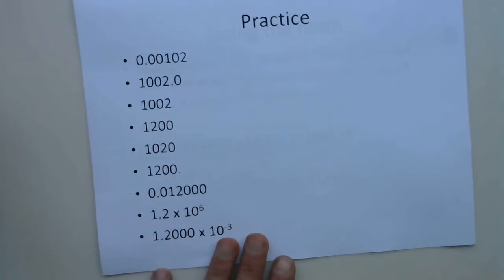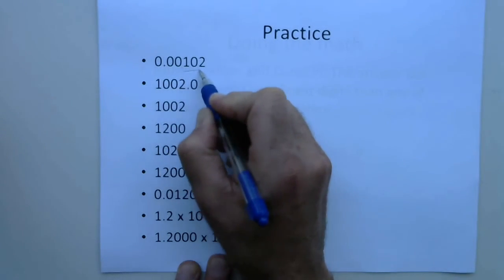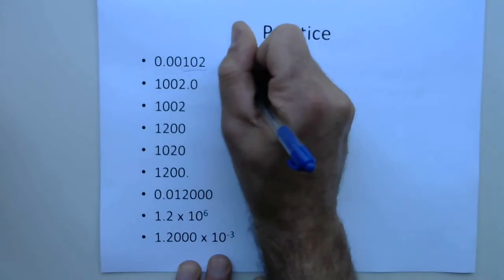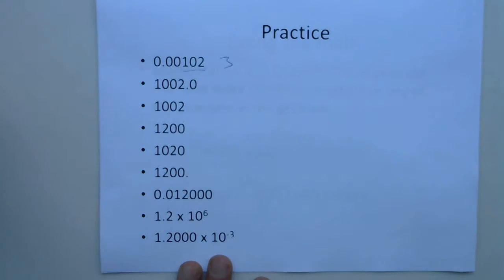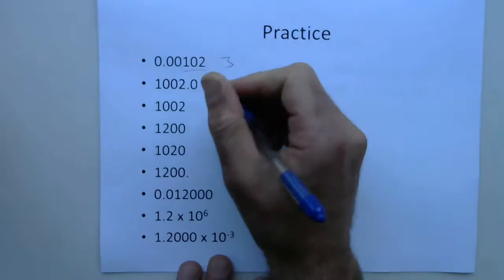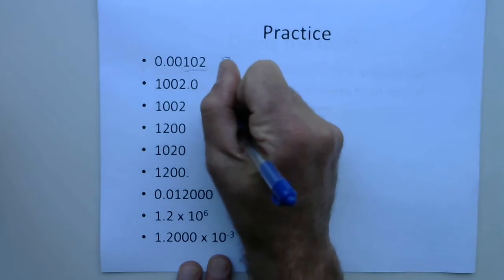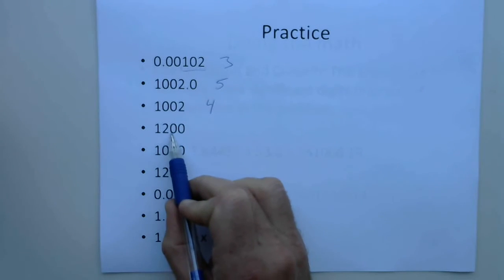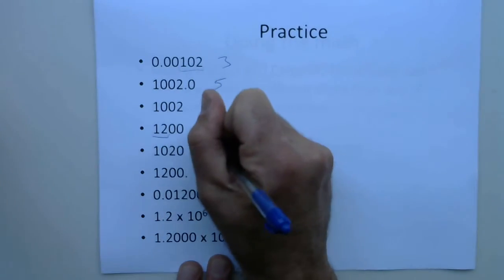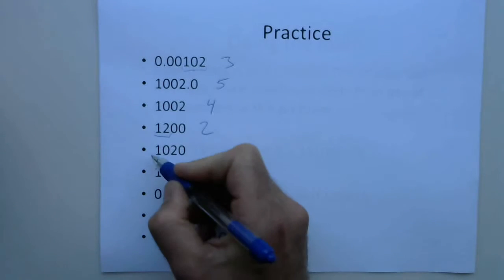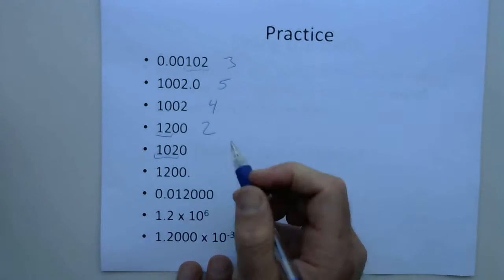Let's practice this. For the first number, zeros before the first digit don't count, but zeros between the two non-zero digits do — so that has three significant figures. The next number has a decimal point, so all zeros after the last digit count — all digits are significant, giving five significant figures. Then zeros between non-zero digits are significant, giving four. The next number has no decimal point, so zeros after the last digit are not significant — only two significant figures. And the last one: the zero between the digits counts, but the zero at the end does not because there's no decimal point — so that has three.